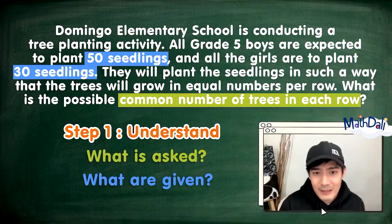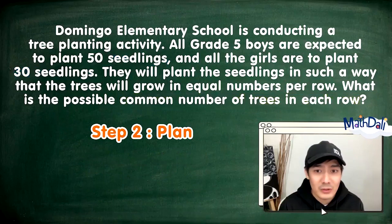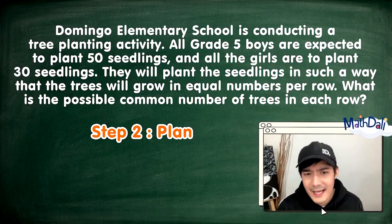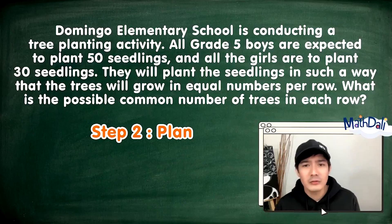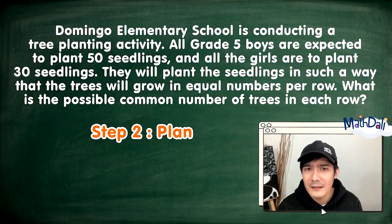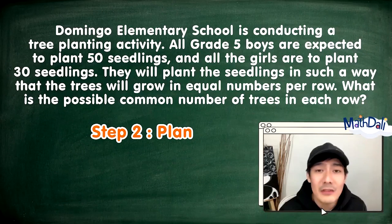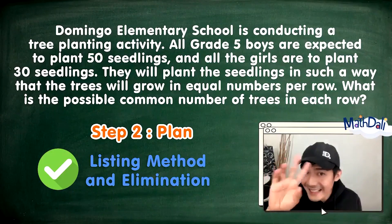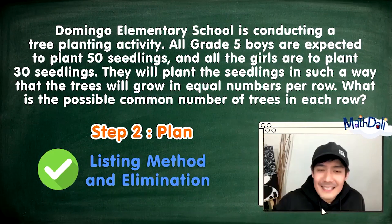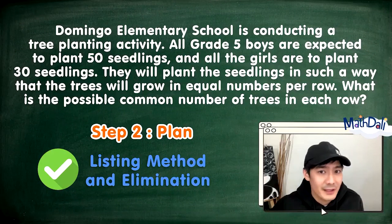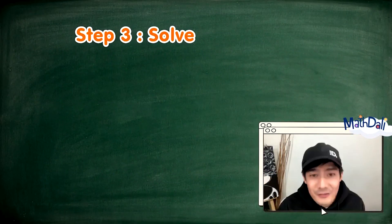Now that we understand the problem, tumungo po tayo to step number two: devise a plan. Ano nga ba yung method o procedure na maaari natin gamitin para makuha yung common factors ng 50 at 30? Listing method muna — pwedeng listing method. Bago tayo pumunta sa divide-divide, listing method yung pwede natin magawa. Now let's proceed to step number three: execute the plan — solve na natin.